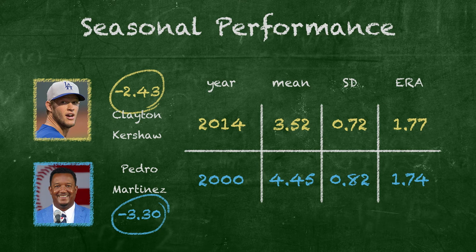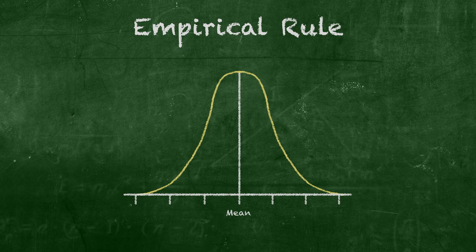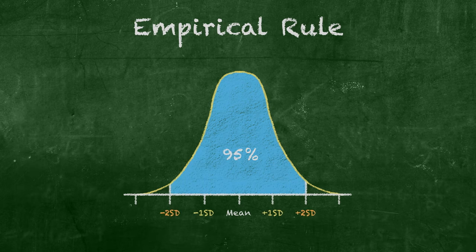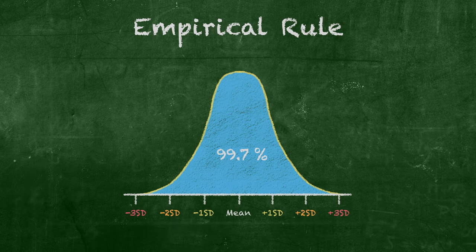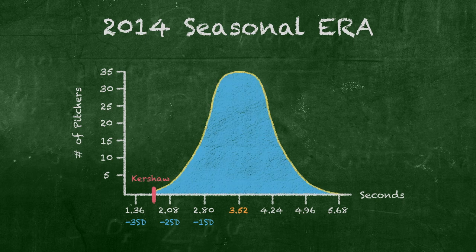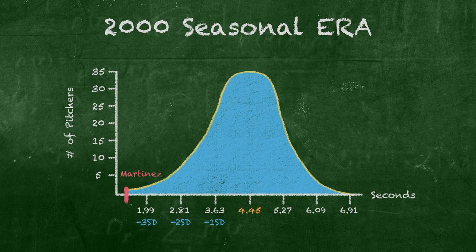It does bring a tear to my eye to see statistics bringing closure to some of sports' most difficult questions. Now, Robert, I'd be remiss if I failed to mention that we can also apply the Z-score in relation to the empirical rule. According to the empirical rule, roughly 68% of the data are within one standard deviation of the mean, 95% are within two standard deviations, and about 99.7% of the data are within three standard deviations of the mean. Since the Z-score represents how many standard deviations a value is from the mean, we can use it to get an idea of how likely a specific data value is to occur. With Kershaw and Martinez, both players have extremely low Z-scores, meaning virtually all other ERA data points would be above theirs. Sure enough, we checked the ERAs for every pitcher in both 2014 and 2000 and confirmed that both pitchers had the lowest ERAs in their respective years. That, my friends, is the power of the Z.